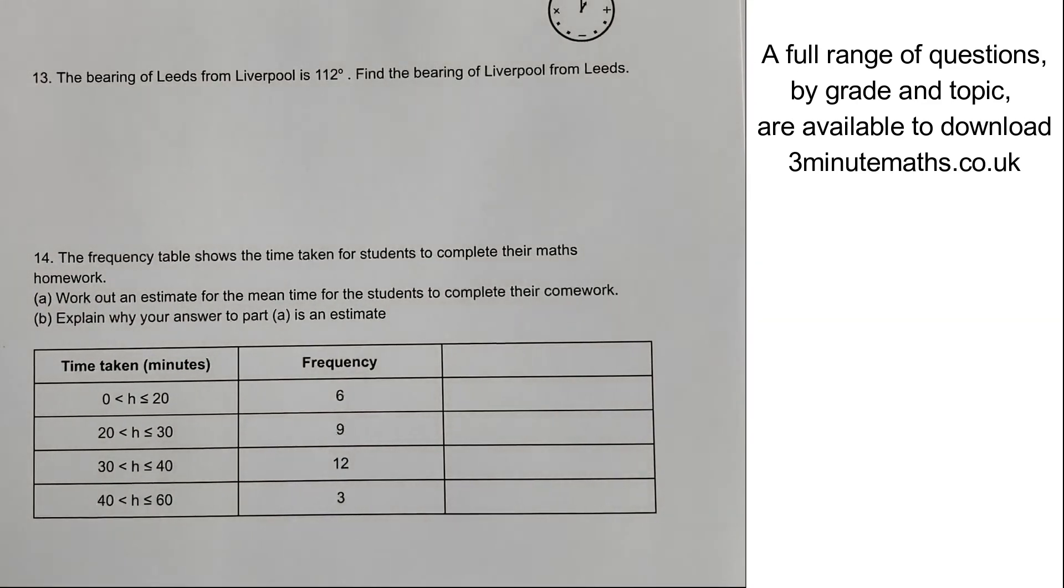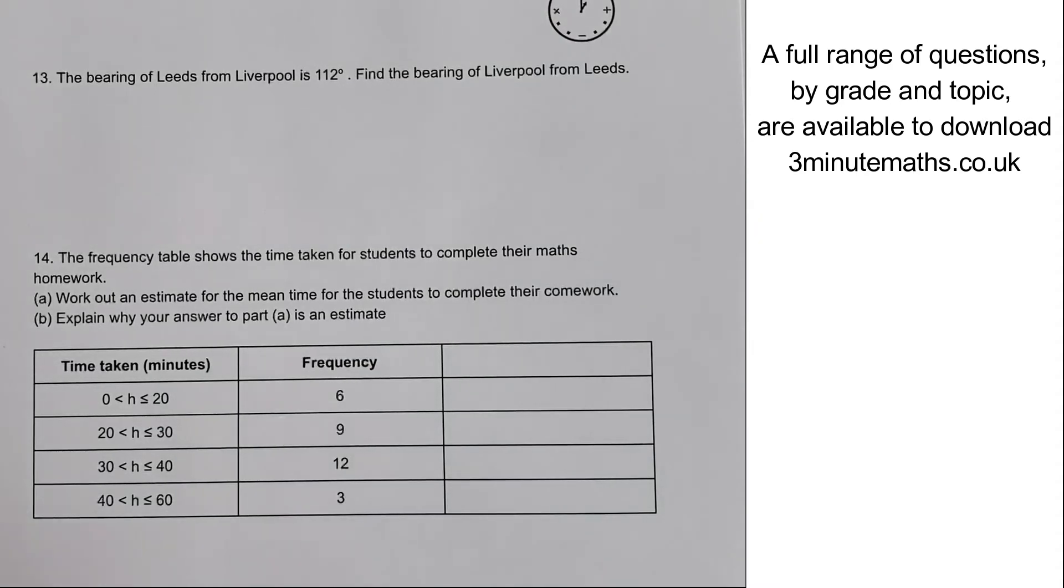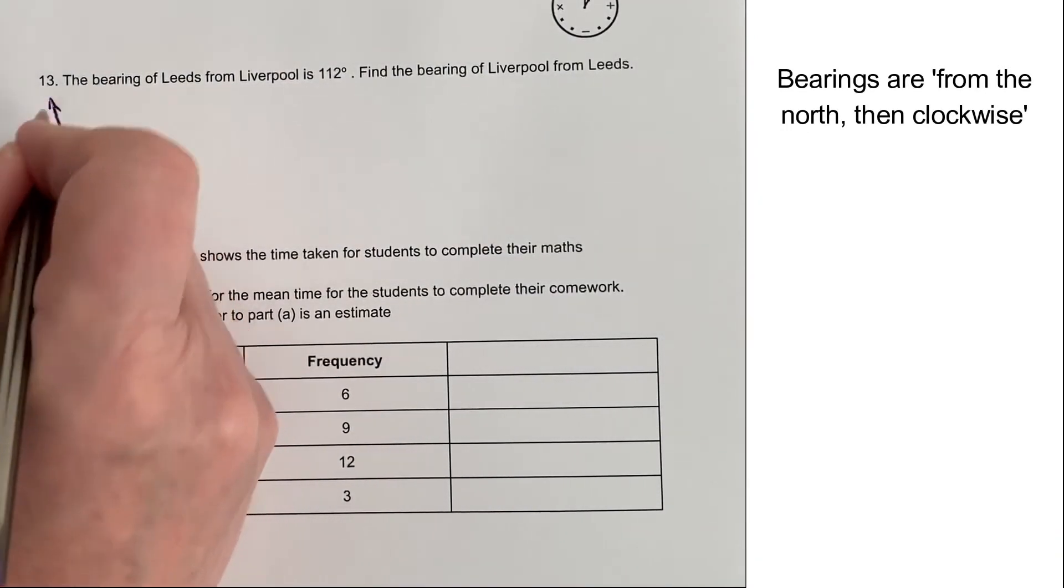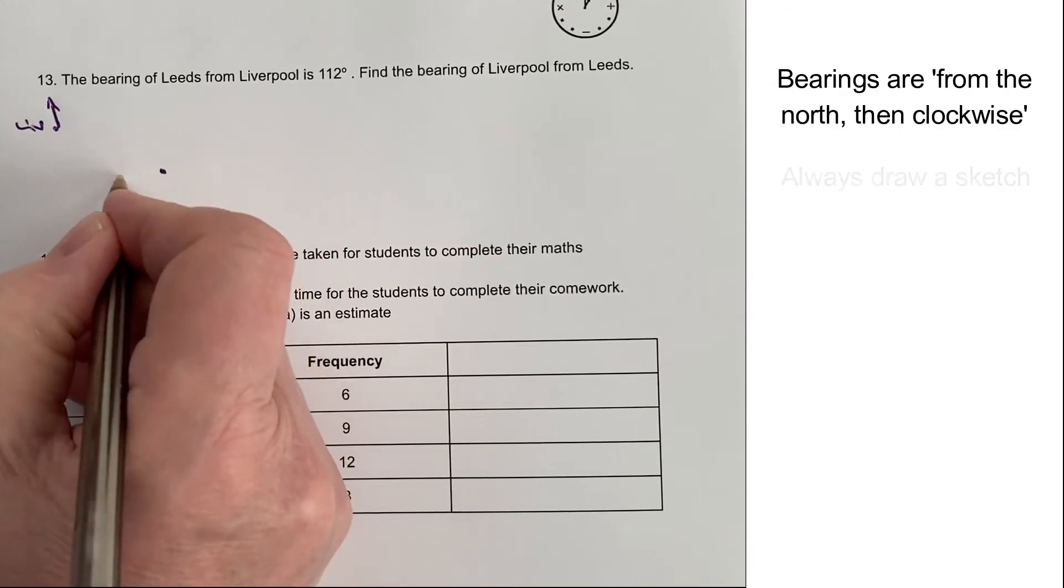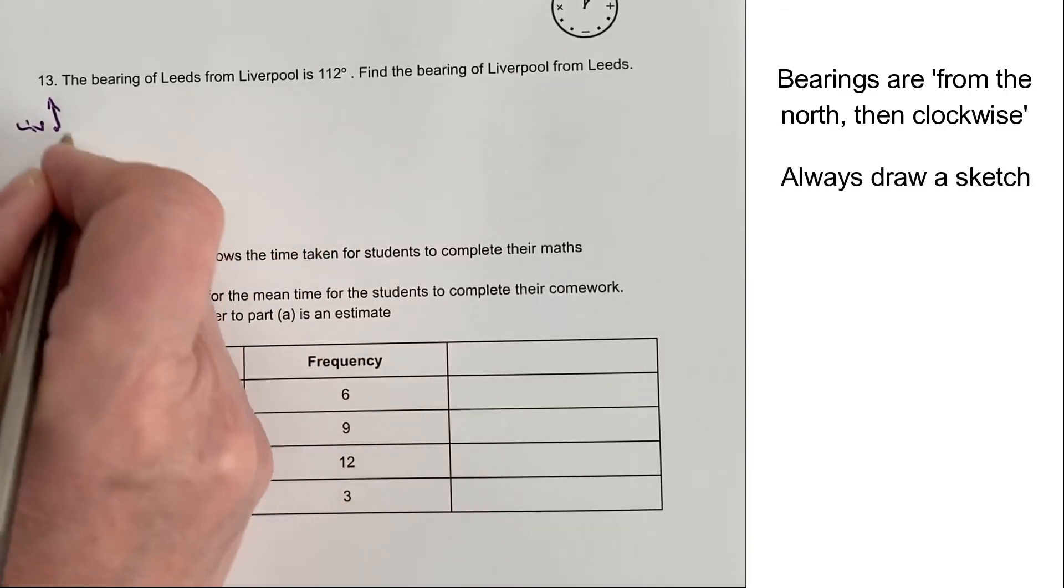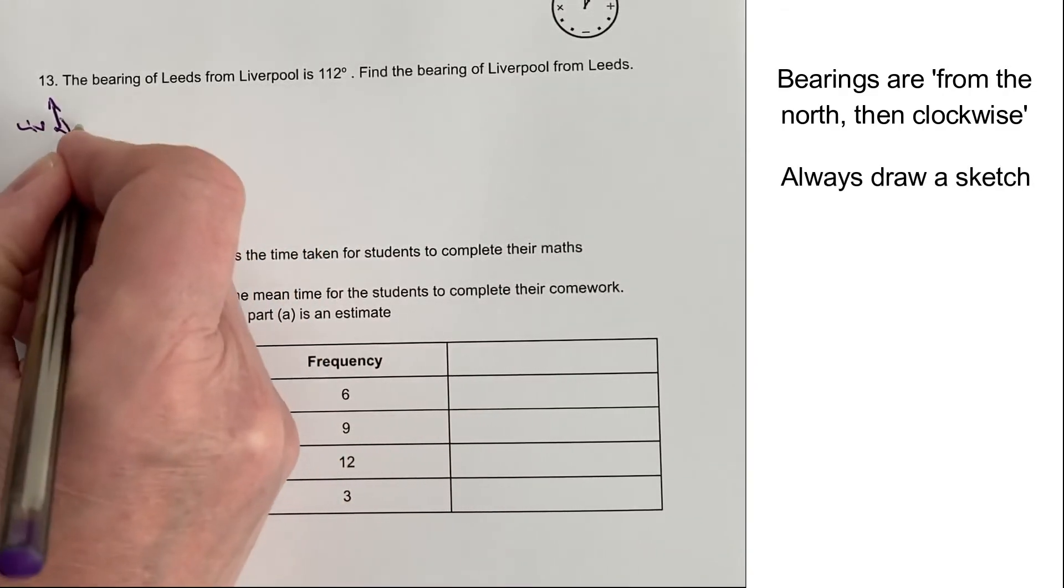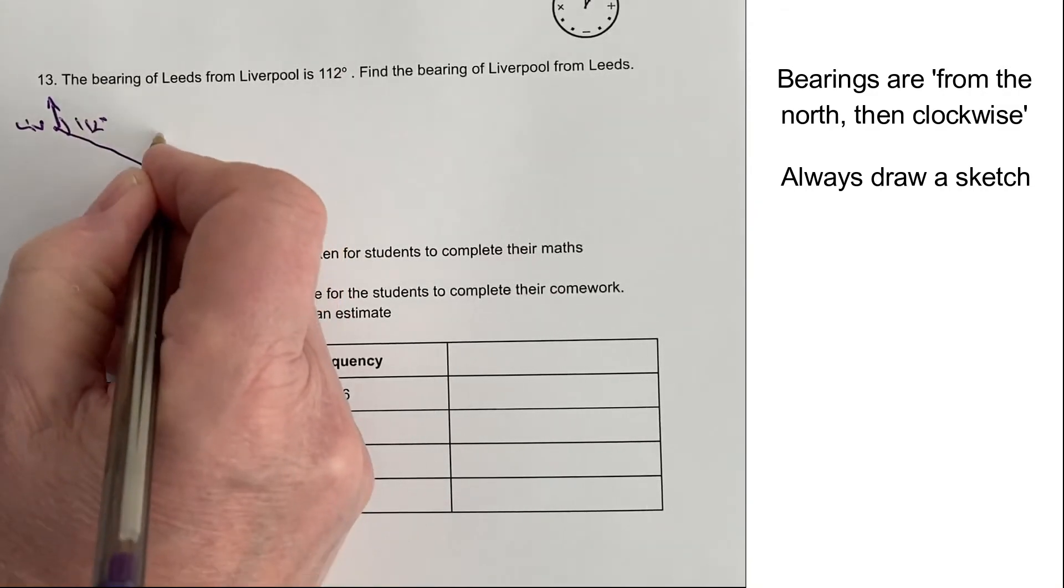one of which is a bearings question, which are very popular, particularly with non-calculator type questions. So we've got the bearing of Leeds from Liverpool is 112. So if you can imagine you're in Liverpool, here's Liverpool, and Leeds is going to be down here somewhere. And what we're saying is this bearing here is 112 degrees.